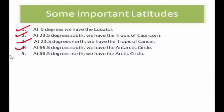At 66.5 degrees south we have the Antarctic Circle — the land of the penguins. Similarly, at 66.5 degrees north we have the Arctic Circle, located in the far northern parts of Europe, Russia, Alaska, and Canada. Keep these important latitudes in mind, as they will be very helpful when doing map reading on an atlas.